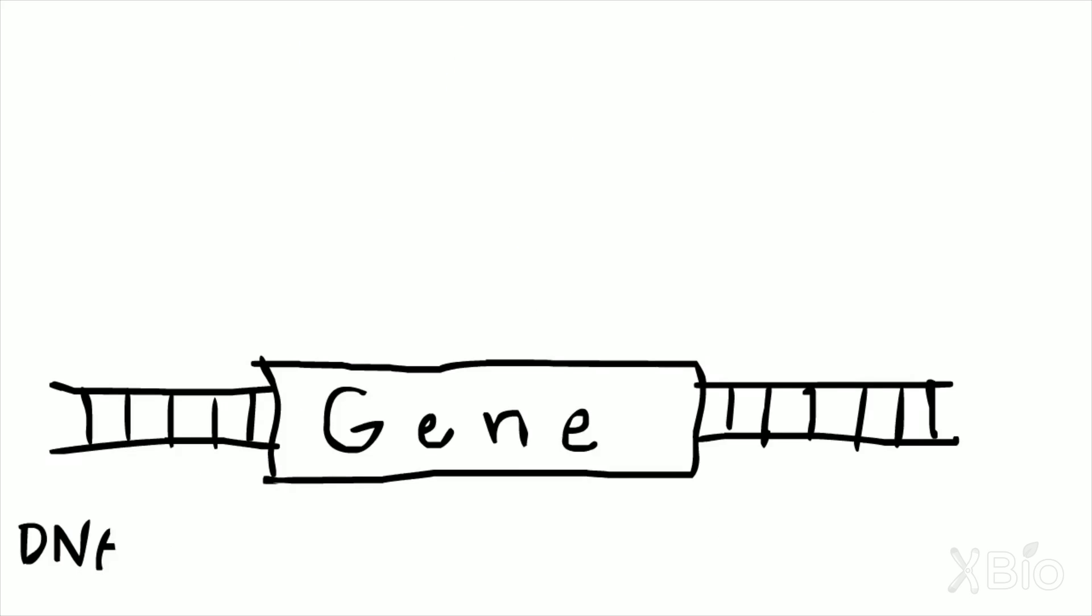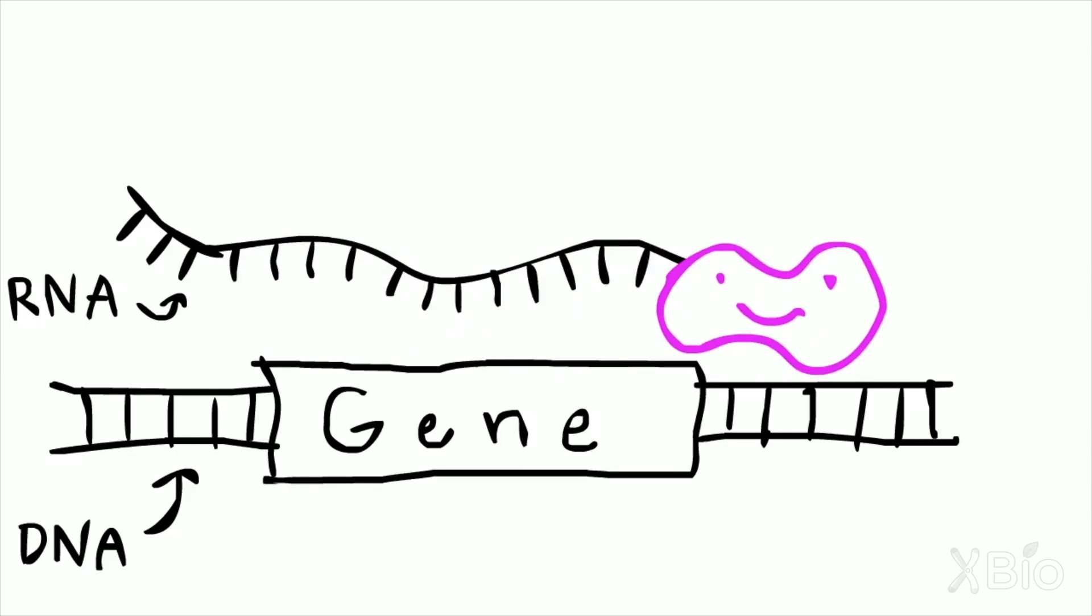Generally, RNA polymerase only wants to transcribe regions of DNA called genes, as these provide the correct instructions for making useful RNA.